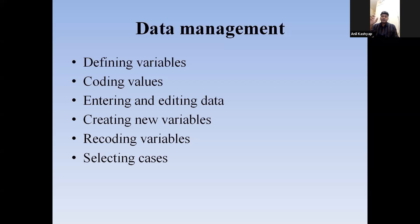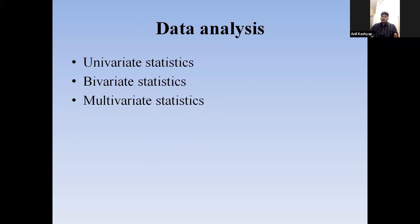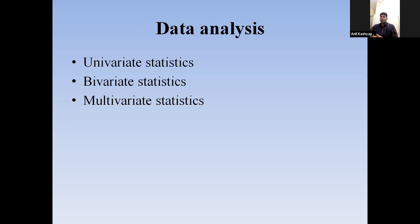SPSS does about 40 or 50 percent of what Excel can also do. For the data analysis part, whatever research analysis we do can be categorized into three parts: univariate statistics, bivariate statistics, and multivariate statistics. In Excel we can do the initial two analyses — univariate and bivariate. If we are collecting names from our class, it doesn't give any statistical value to design a class strategy or university strategy.